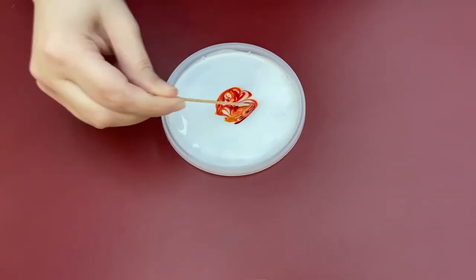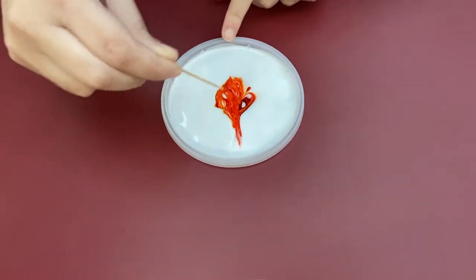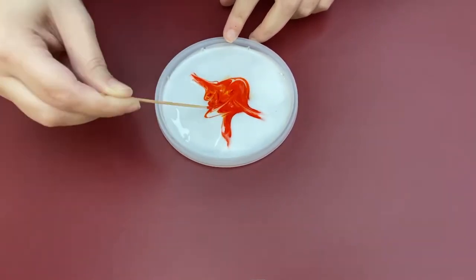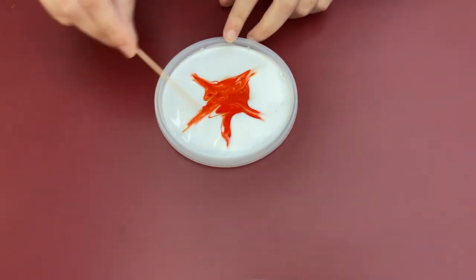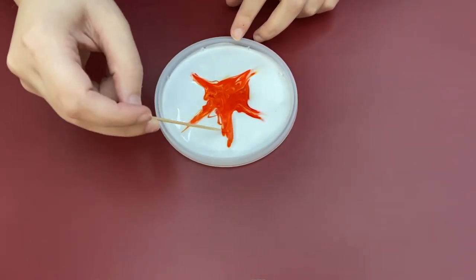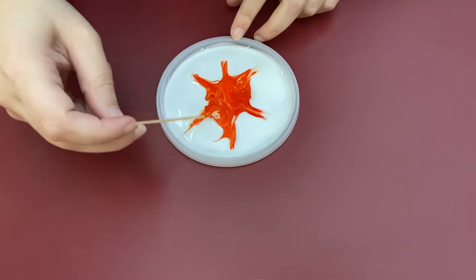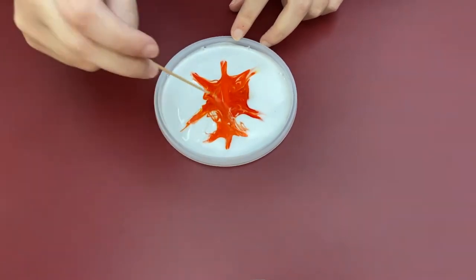Take a toothpick and start mixing the colors together to the desired amount and begin to make the shape of a leaf in the glue. I chose to make a maple leaf, but you can choose any leaf shape you like.